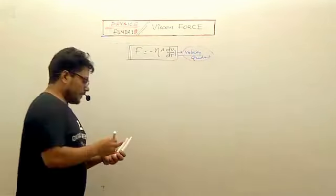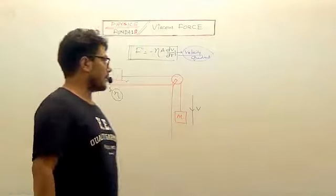This block is moving with constant velocity V. Find eta, that means find the coefficient of viscosity for the given liquid.